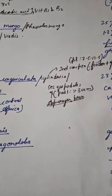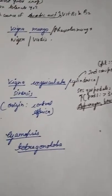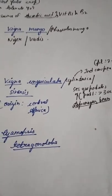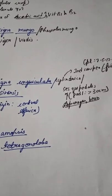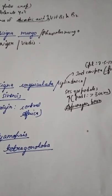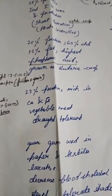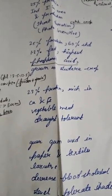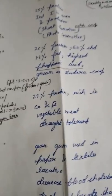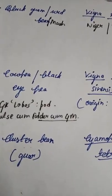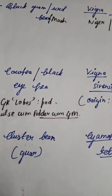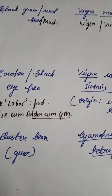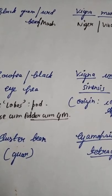Vigna unguiculata variety sesquipedalis is asparagus bean. Cow pea contains 23% protein, is rich in calcium and iron, and is also known as vegetable meat. It is rot tolerant. Important varieties of cow pea are Pusa Sawani and Pant Ritu Raj.